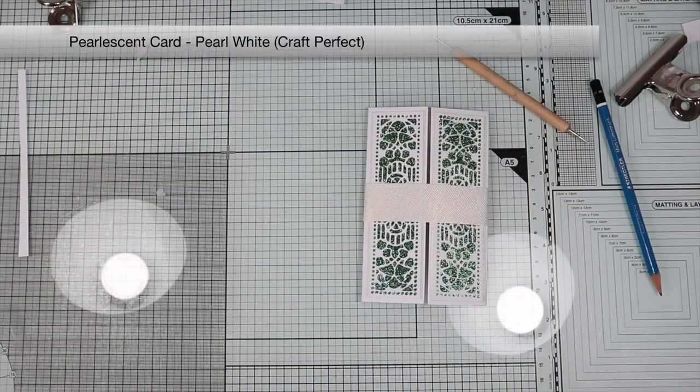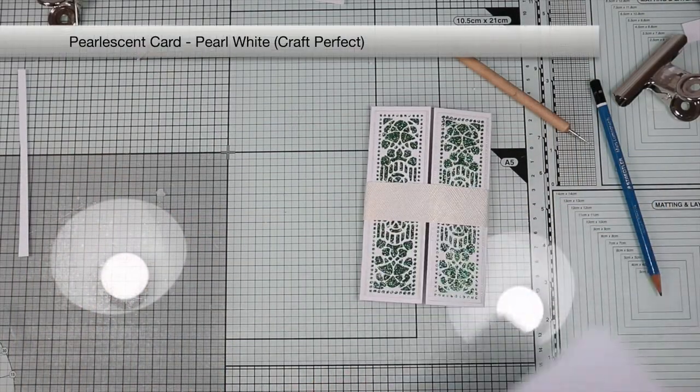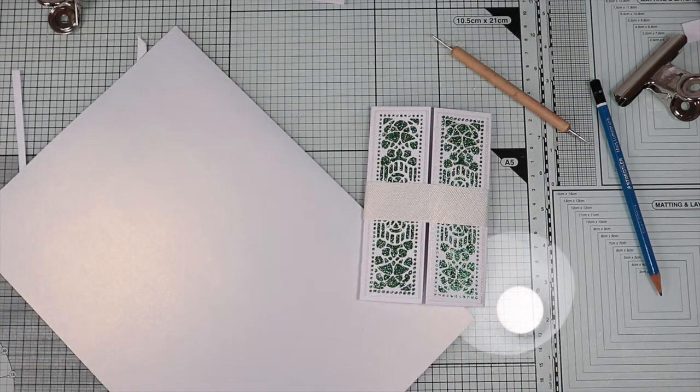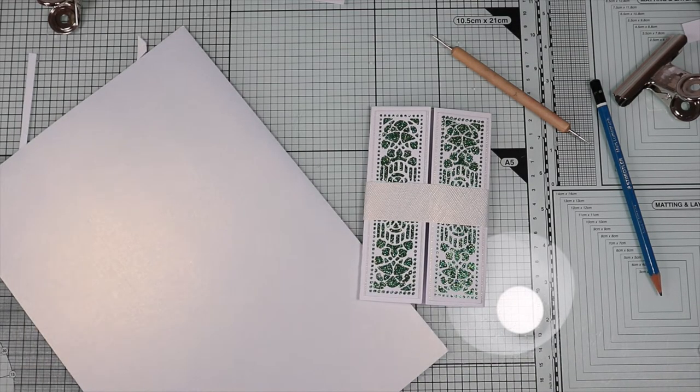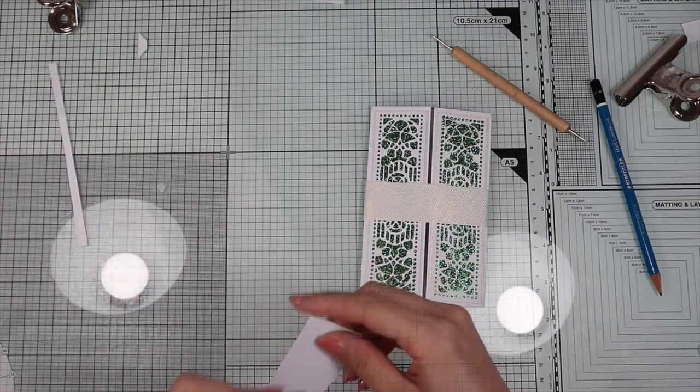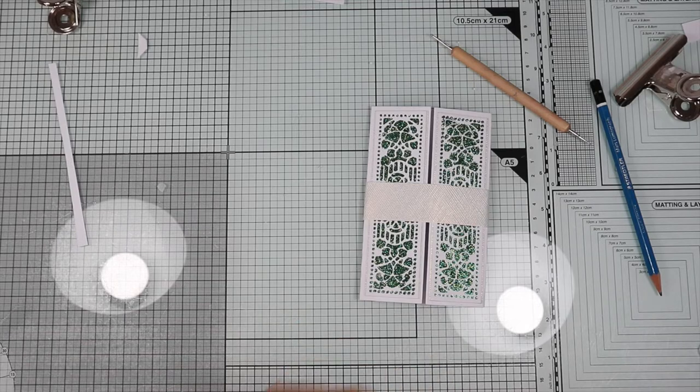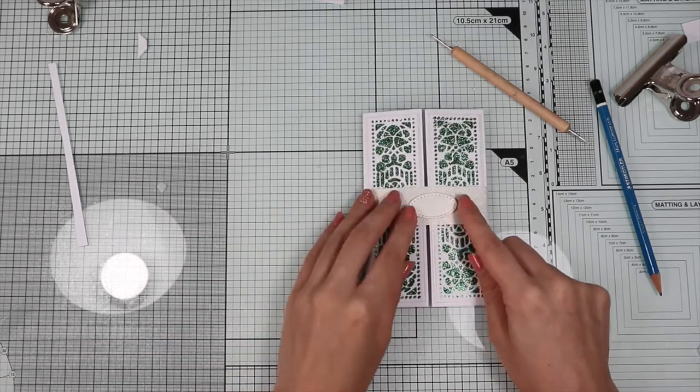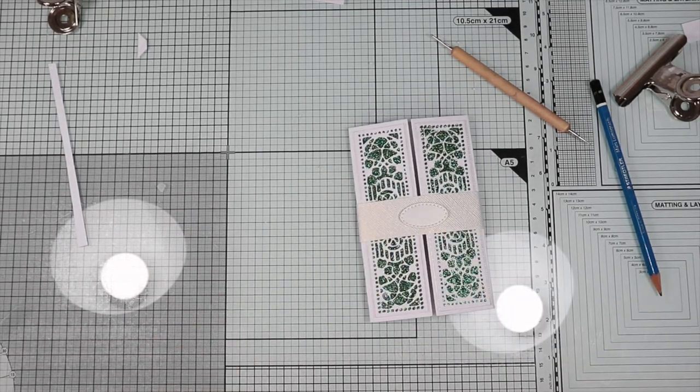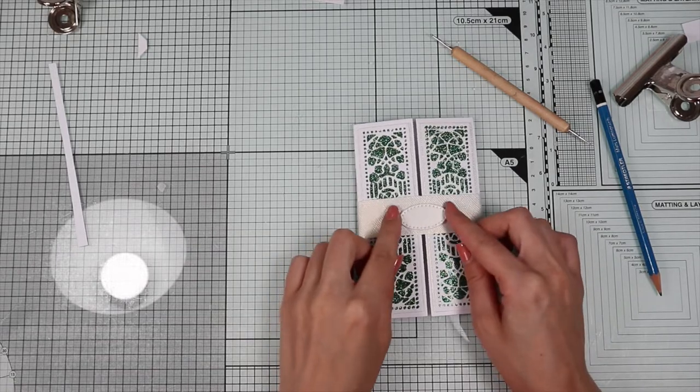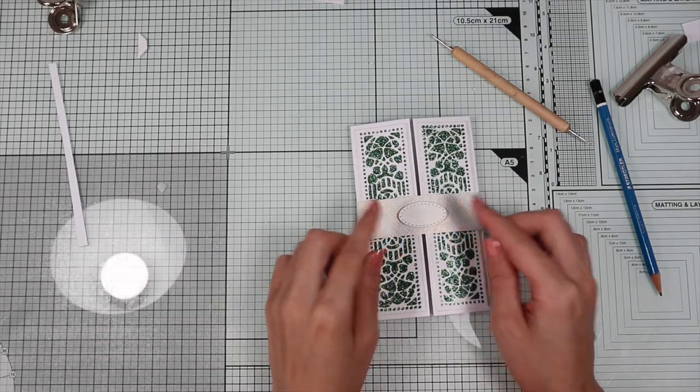As I said at the beginning of the video, I'm going to show you how to create a decoration that looks like a small gemstone. With the small oval die that we find in the kit, I'm going to die-cut the base of the gemstone on the white pearlescent paper always included in the kit.